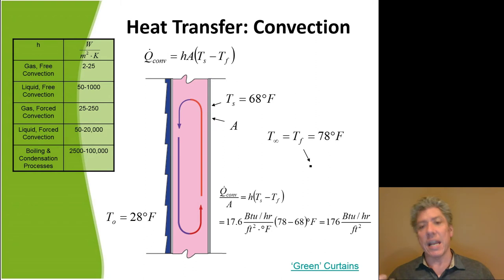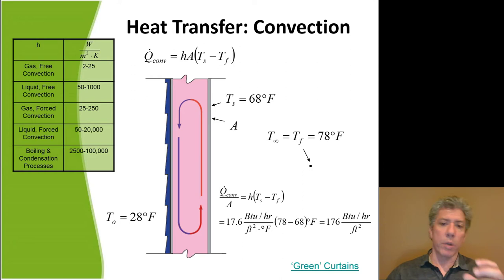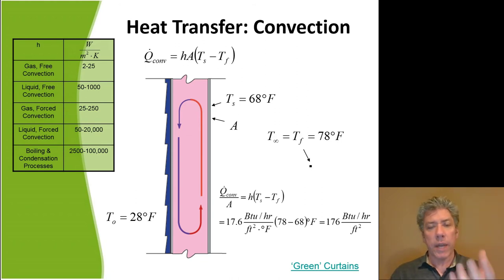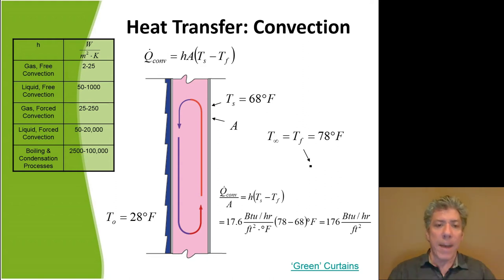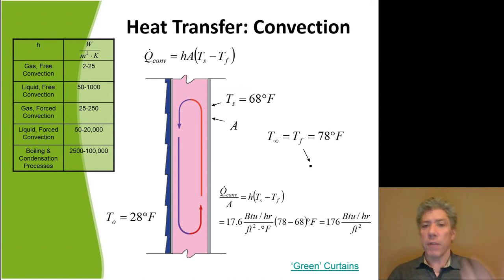If you think about gas with free convection — the first row in the table — the typical convective heat transfer coefficients are from 2 to 25 watts per square meter per Kelvin. By free convection I mean any gas — air, nitrogen, combustion gases — where the fluid moves not because you've pushed it with a fan but simply because as it warms it becomes more buoyant and rises in the gravity field.